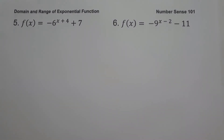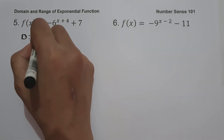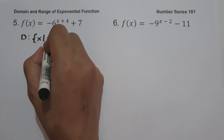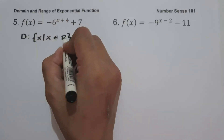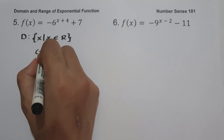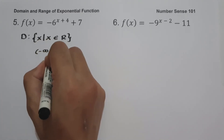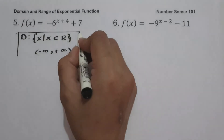On example number 5: f(x) = negative 6 raised to x plus 4 plus 7. The domain is the set of x values such that x is the set of all real numbers, or in interval notation, from negative infinity up to positive infinity.